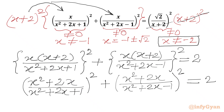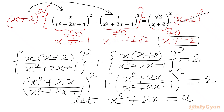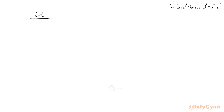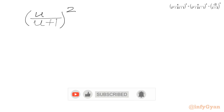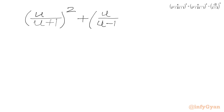Now we will use substitution. Let us say x squared plus 2x equals u. So the numerator will be u, the first denominator will be u plus 1, and the second denominator will be u minus 1.